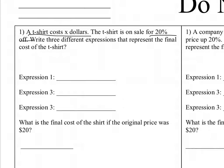Looking at this, we can start with the expression: we start with x dollars, and then it's a discount, so we're going to be subtracting 20% of the original amount, so that's 0.2 times x.